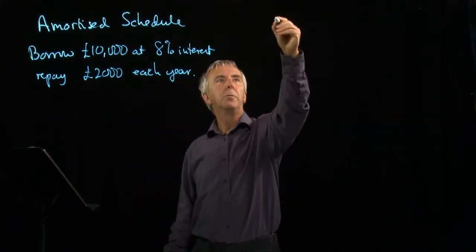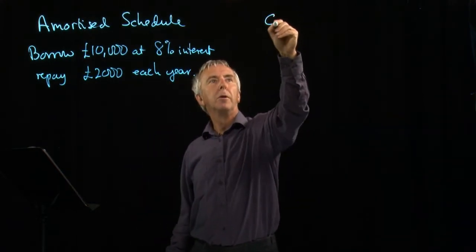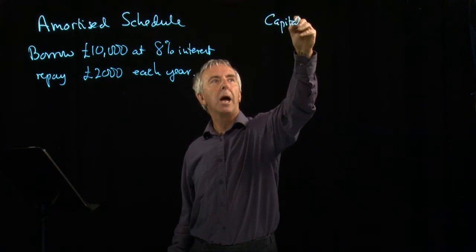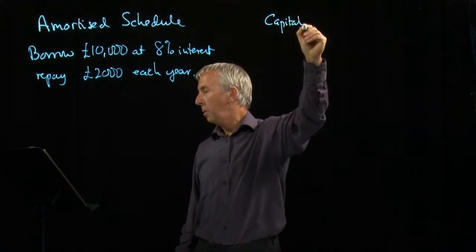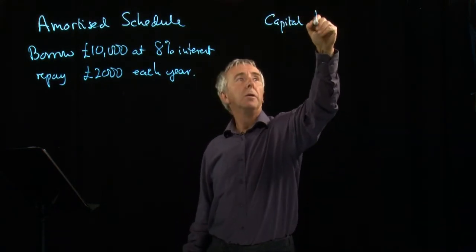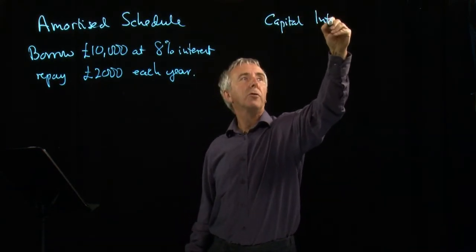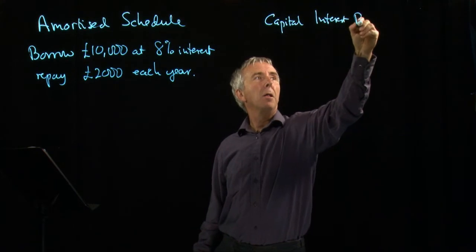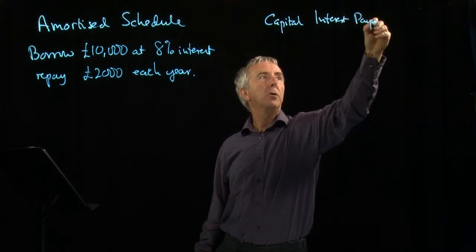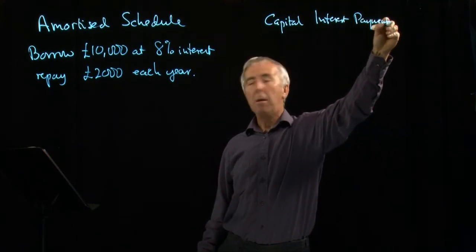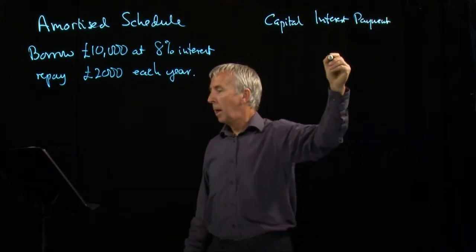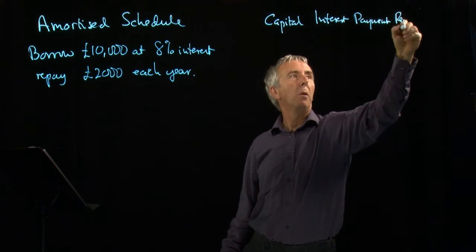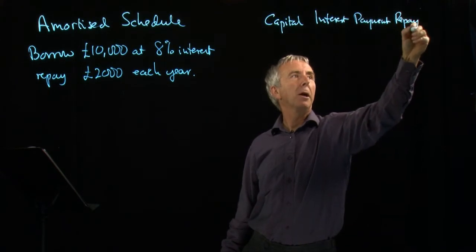We need four columns here: the capital — this is what we actually owe — the interest, the payment, and the repayment, which is what we actually repay.